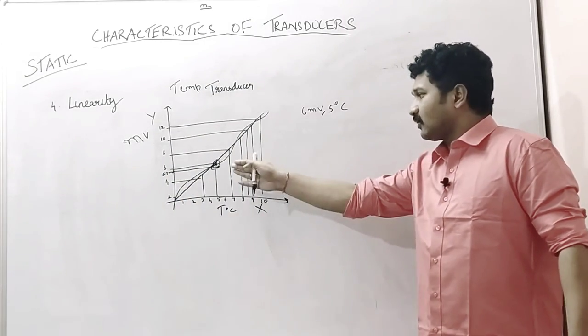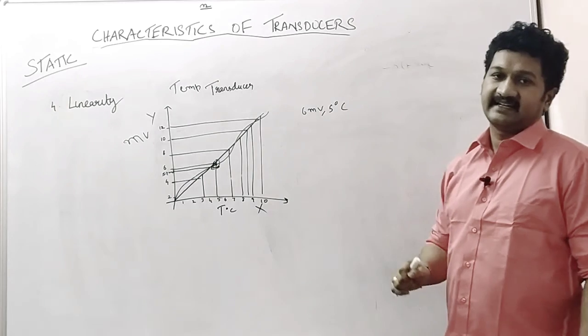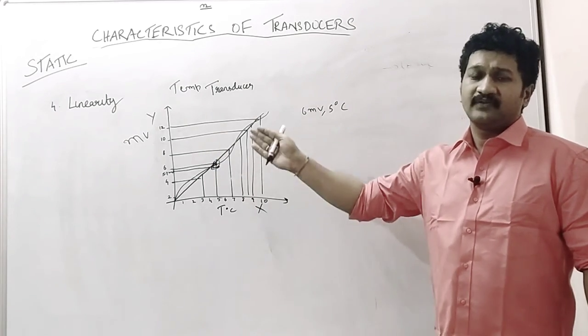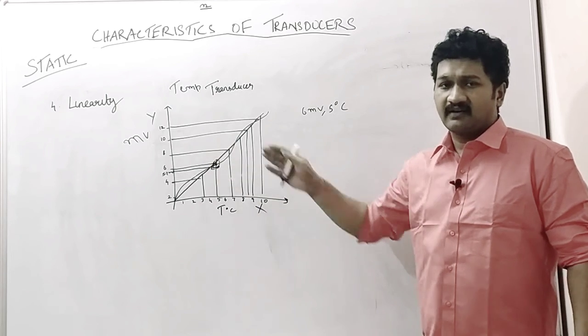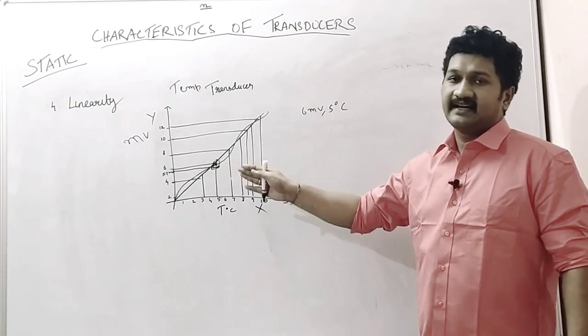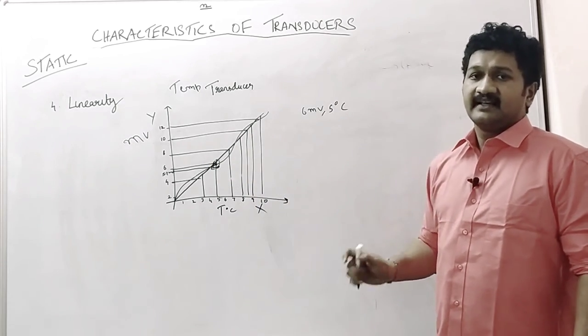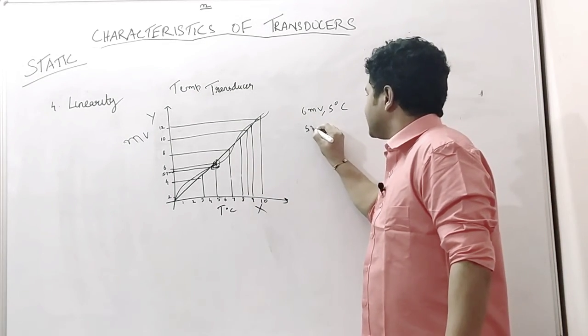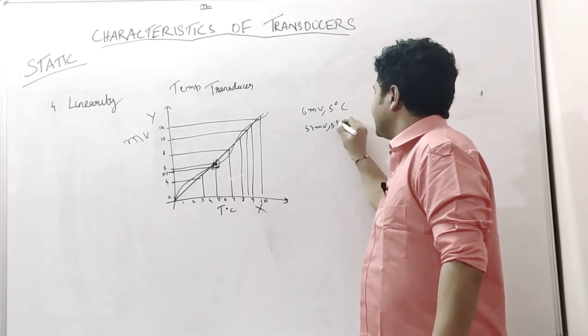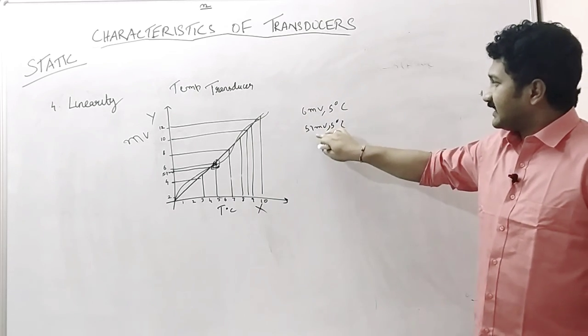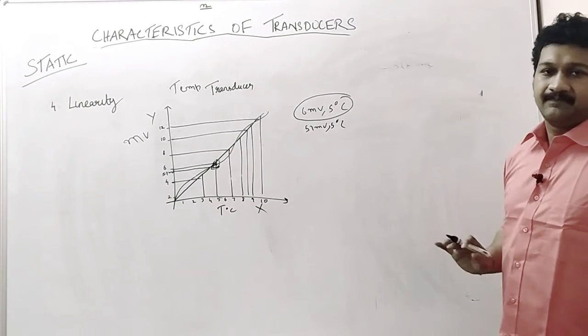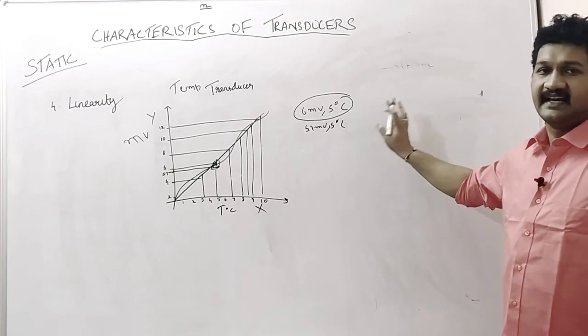This is called a deviation in linearity. If we get the desired output for our input, it is called linearity—the device is linear. If we did not get the desired output, for example, if we get only 5.7 millivolt for 5 degree Celsius, this means there is a deviation from the original standard measurement.